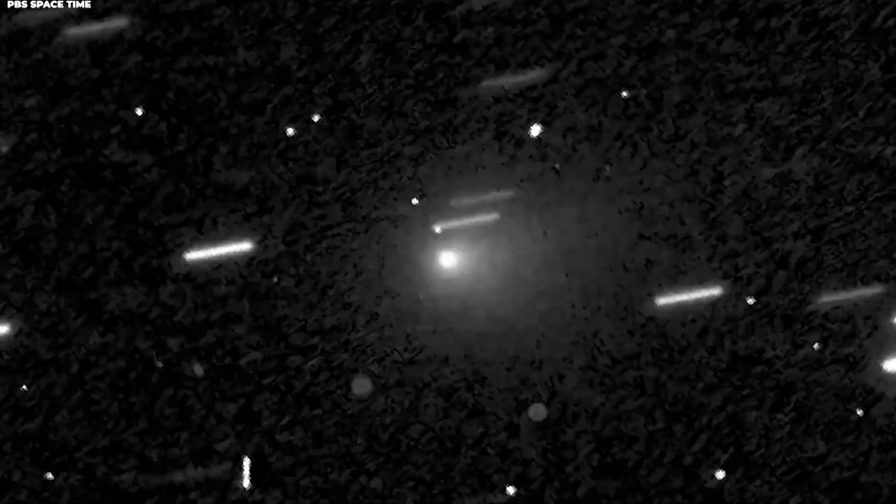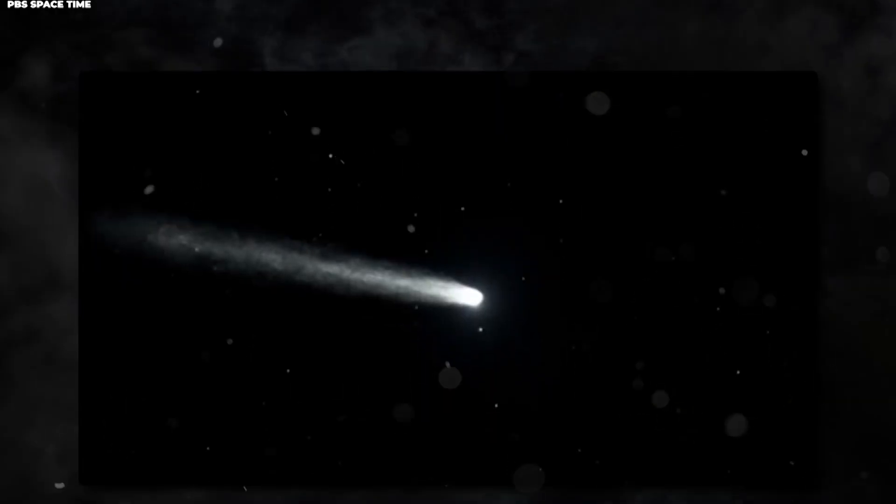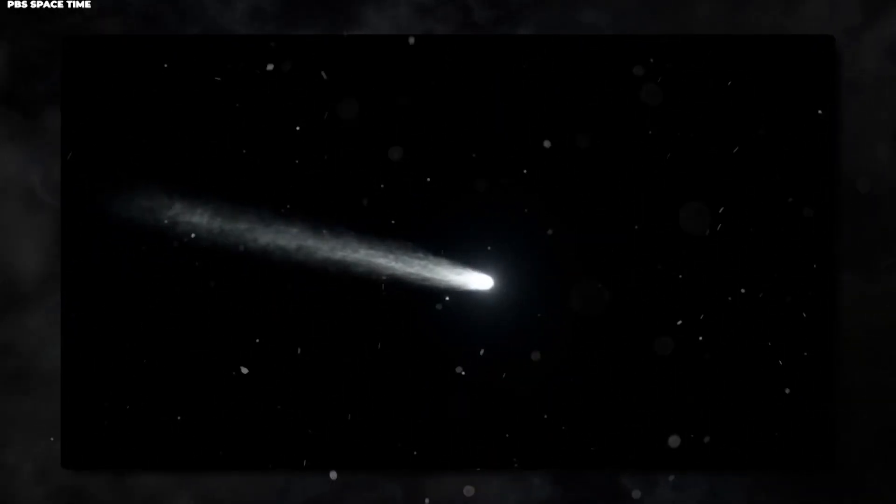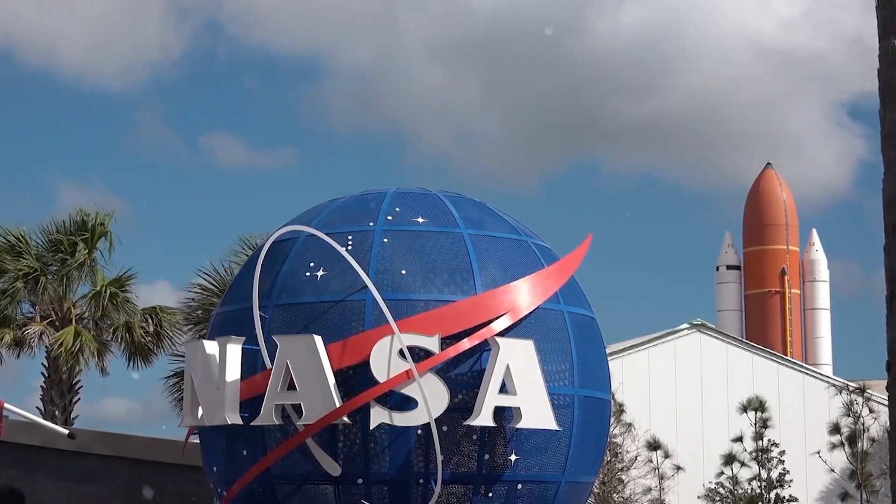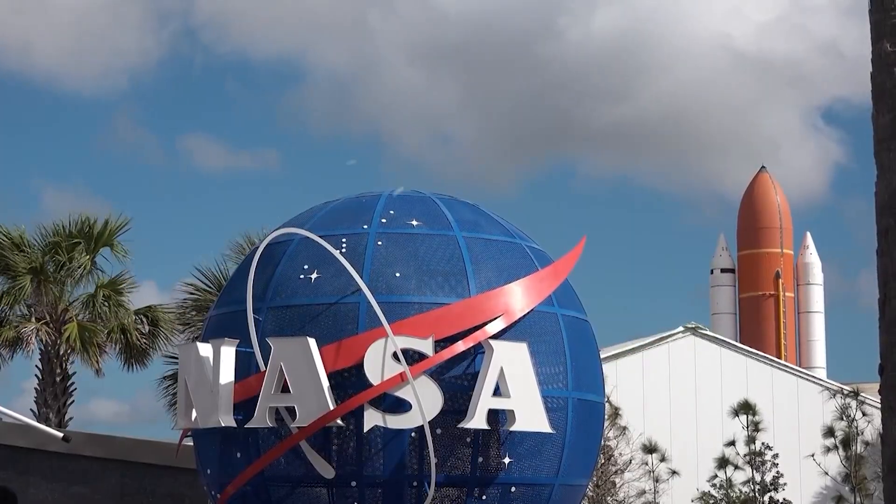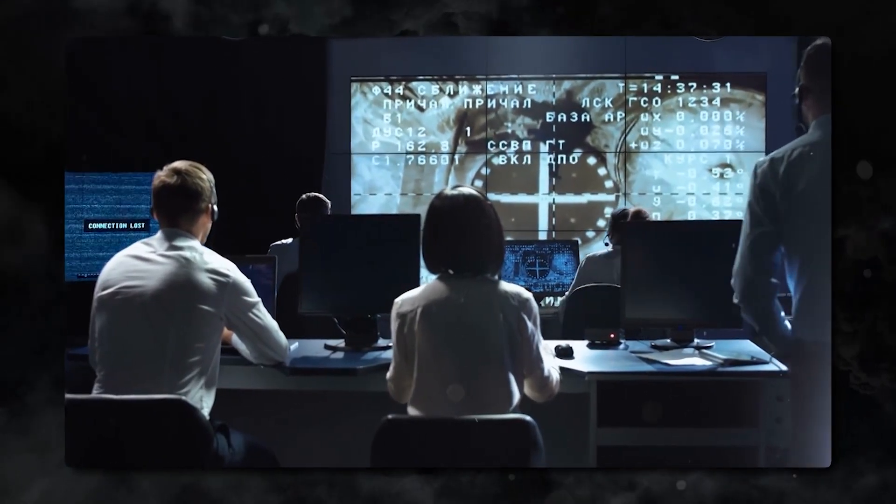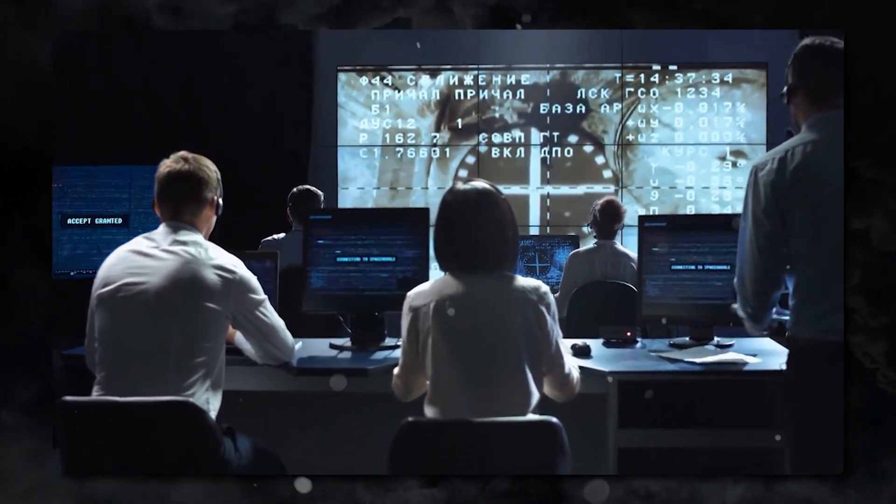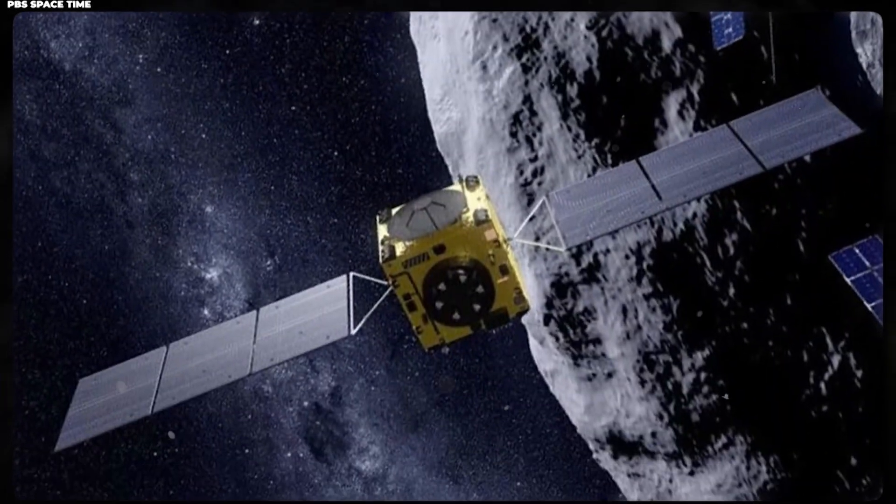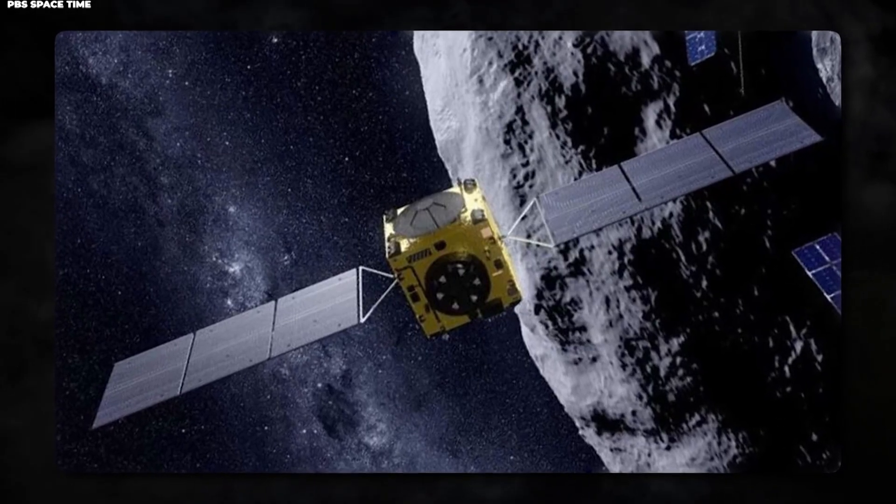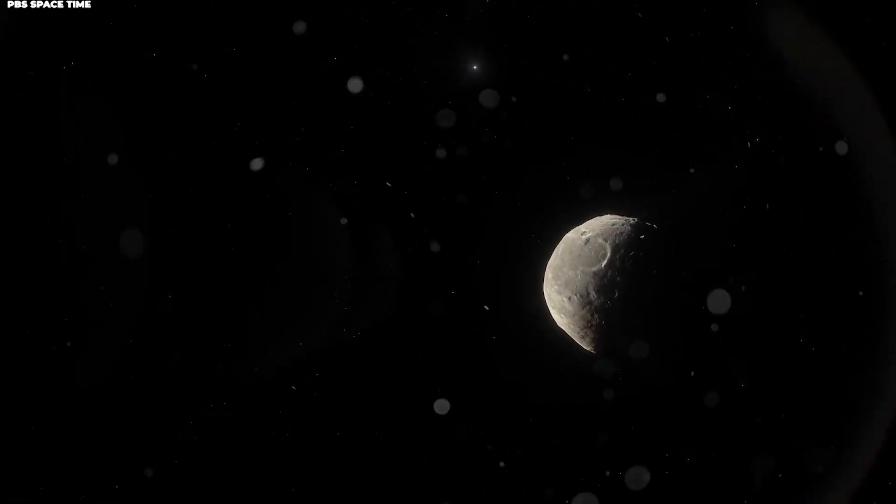Current estimates suggest that at any given time there might be several interstellar objects passing through the inner solar system. We just haven't been able to spot them yet because they're faint and move quickly. NASA and other space agencies are now developing strategies for how to study future interstellar visitors. Some scientists have even proposed concepts for rapid response missions that could launch quickly to intercept and study an interstellar object in detail, perhaps even landing on one. Imagine that. Sending a spacecraft to actually touch and sample an object from another star system. That's not science fiction anymore. It's serious mission planning.